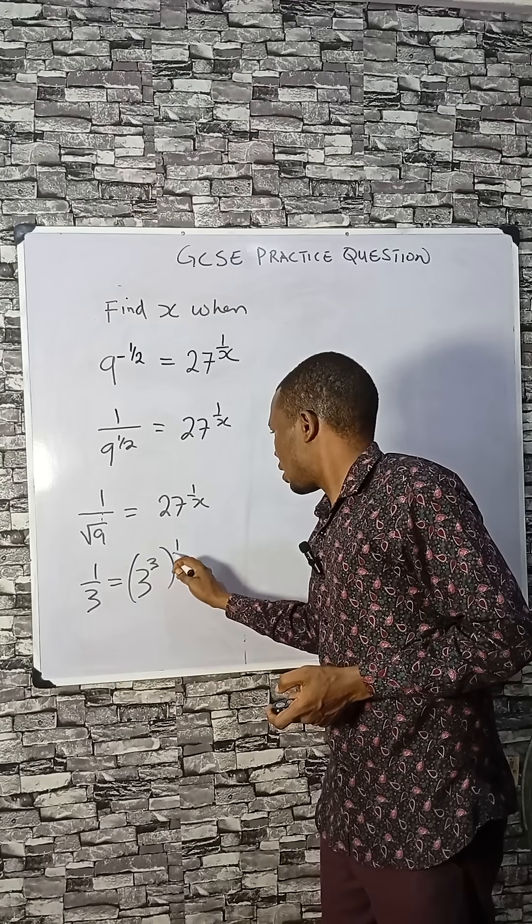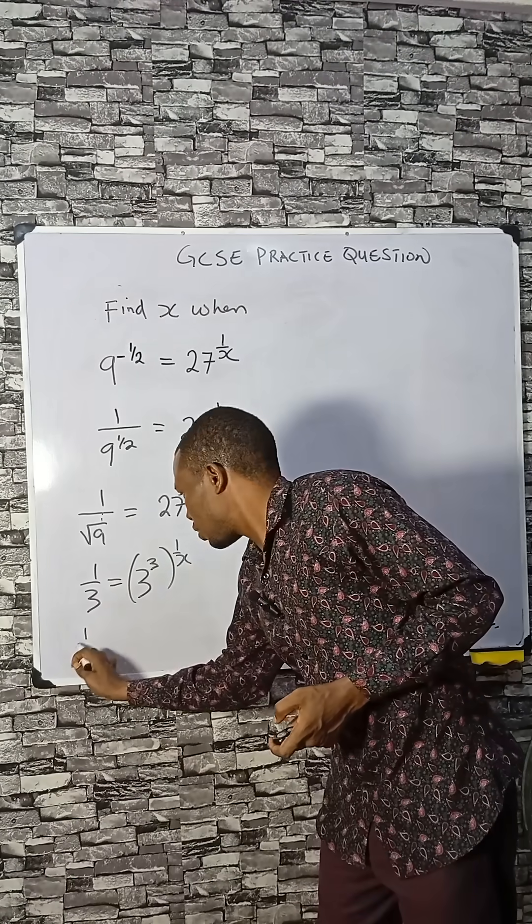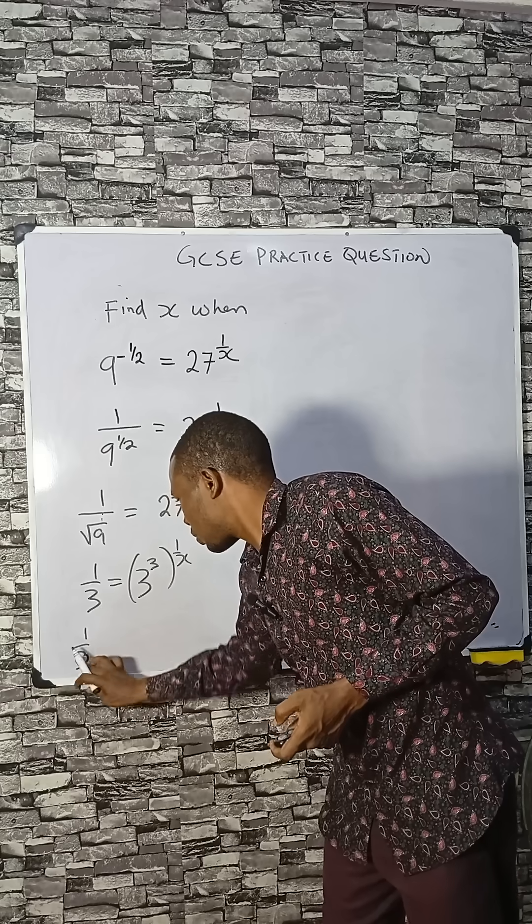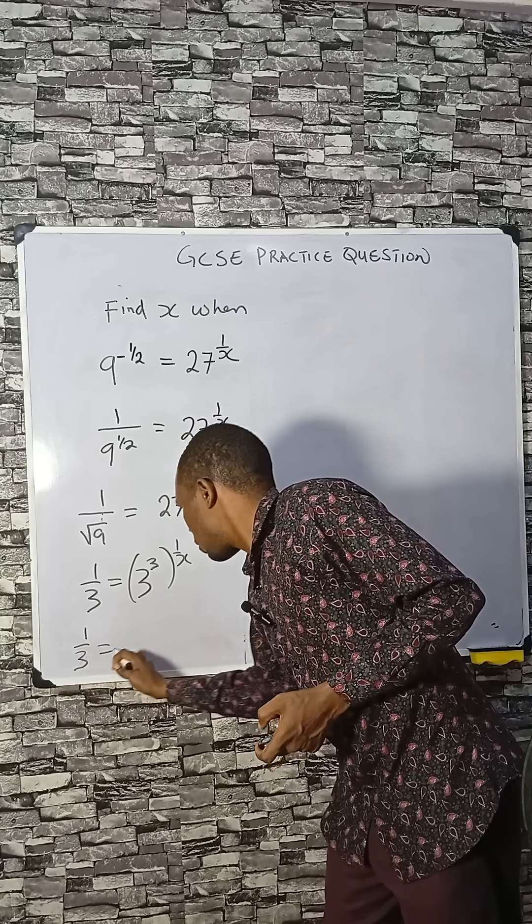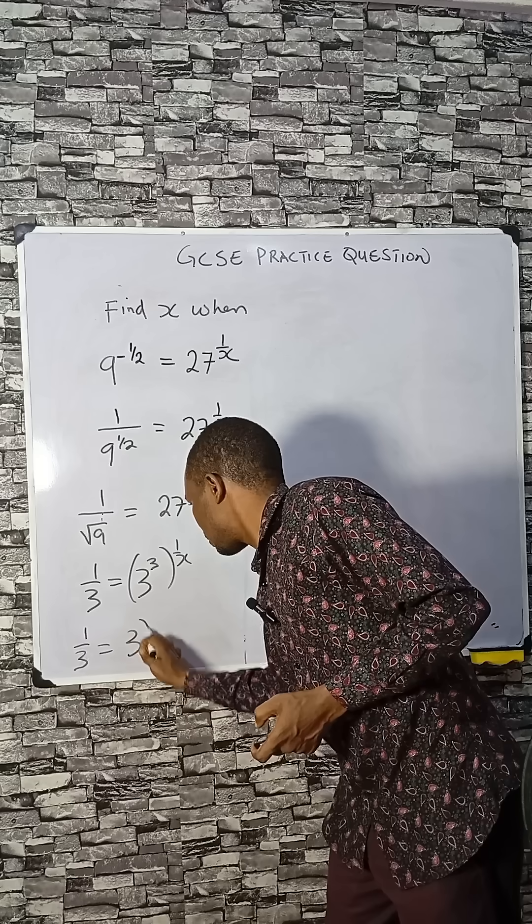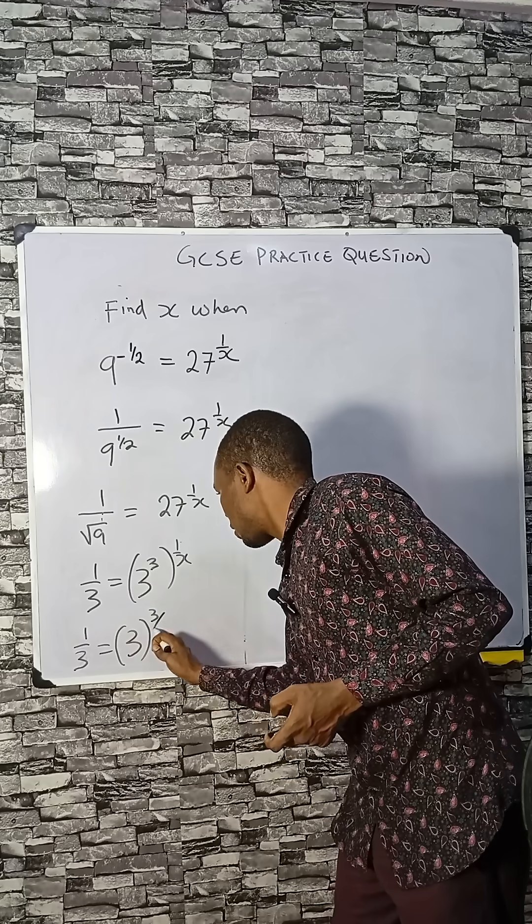All raised to the power of 1 over x. The powers can multiply themselves, so we have 1 over 3 equals to 3 raised to the power 3 times this, that will be 3 divided by x.